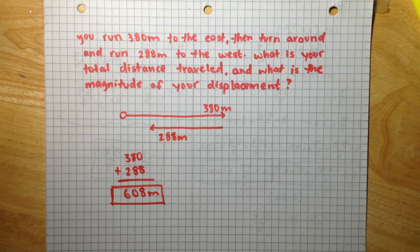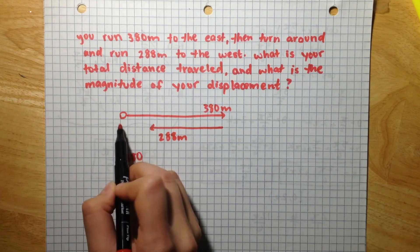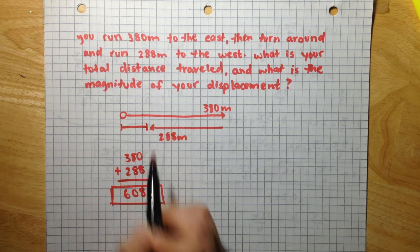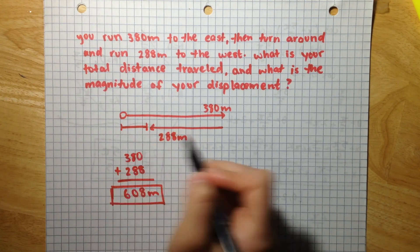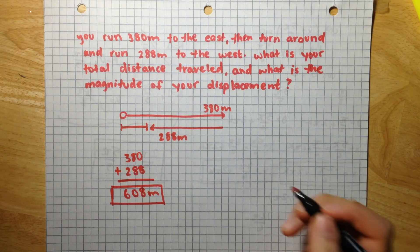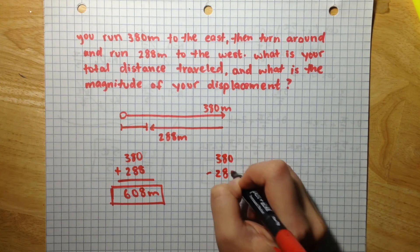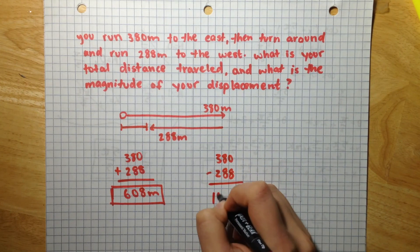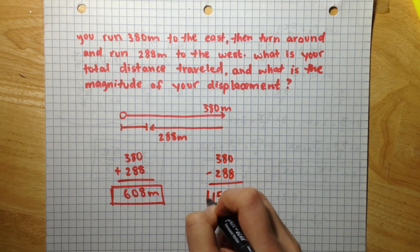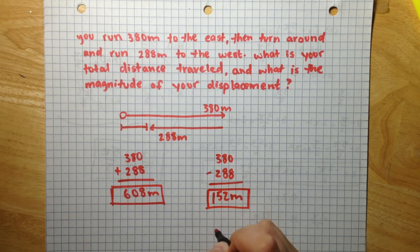And the total displacement is how much you moved from the starting point. So, this is the starting point, and this is how much you moved at the end. So, this is the displacement. So, that would be 380 minus 288, and that gives us 152 meters for your total displacement.